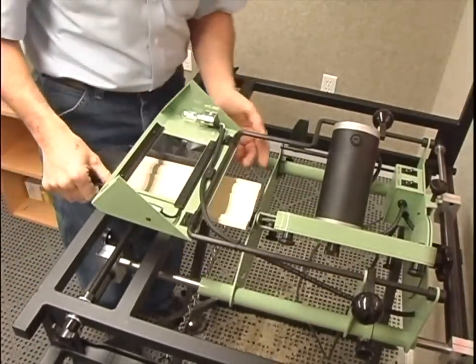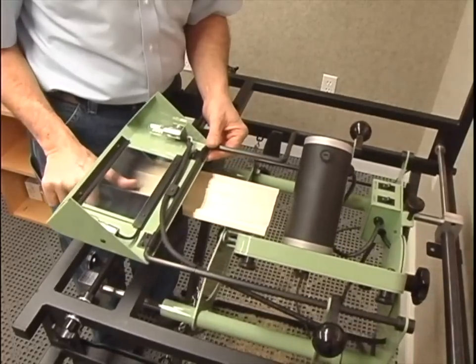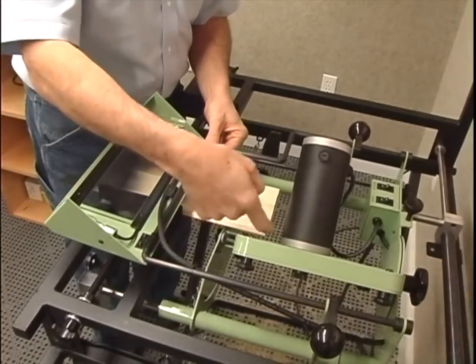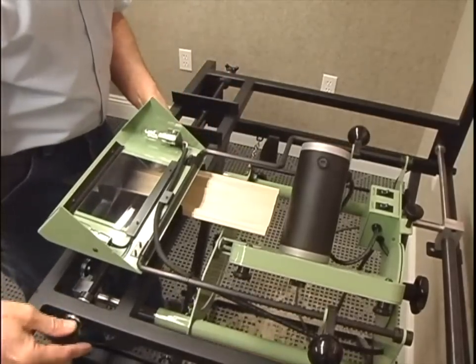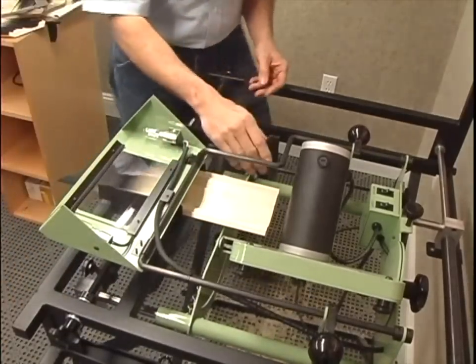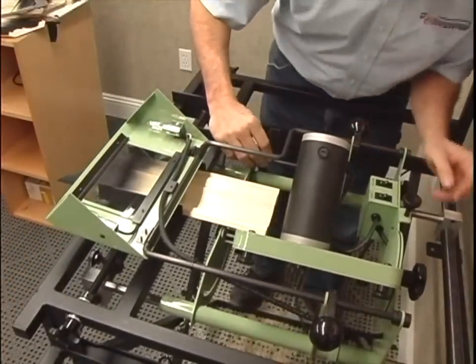One other alternative method to setting the saw angle is to place the molding in the vise reversed and again reference from the bedding angle that sits on the wall. Since we reversed the molding, the bedding angle will now be parallel to the saw blade.